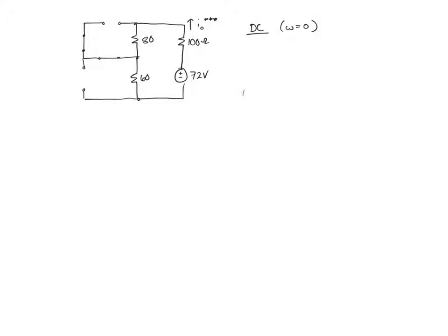So in this problem we can find I₀*** directly, noting that I₀ is just going around this loop and is based on the series resistance of the three resistors. So it's going to be 72 volts divided by the sum of the resistance, which is 100 plus 80 plus 60. I equals V over R. And this works out to be 0.3 amperes.